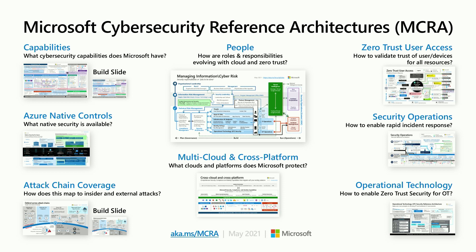Zero Trust user access is a hot topic. Zero Trust is much more, as you'll see on the second page, but what is Zero Trust and what does that first starting point look like? Security operations is a very popular one — how should I think about setting up my tools so I can be analyst-centric and people-centric and really be effective? Native controls — what's built into Azure? Attack chain — what does Microsoft do to cover your common attack chains, insider risk and external risks alike?